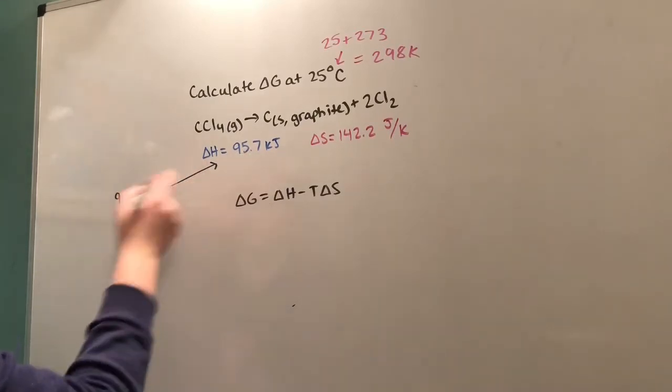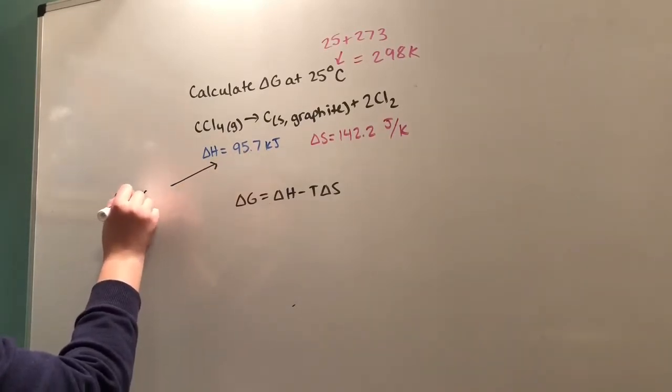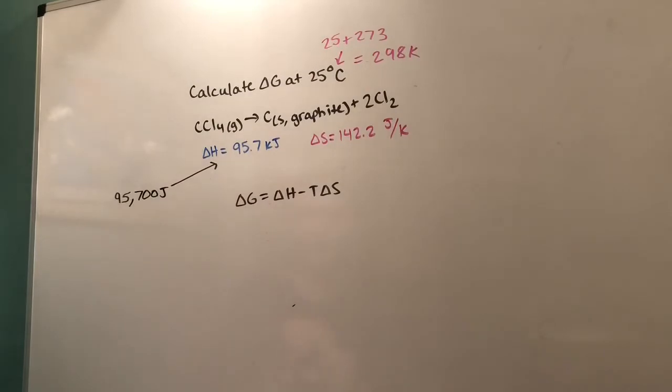So 95.7 kilojoules is 95,700 joules. You could convert ΔS into kilojoules and you would get the same answer both ways.